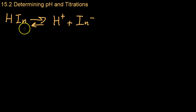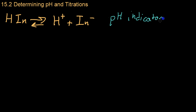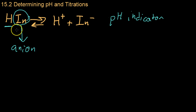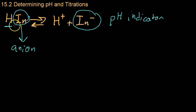We'll start off first with this reaction that shows basically how a pH indicator works. It works by having a hydrogen and some sort of anion — the anion component is shown here. It's a reversible reaction in which the indicator compound breaks up into H+ ions, so protons, and an anion in solution.